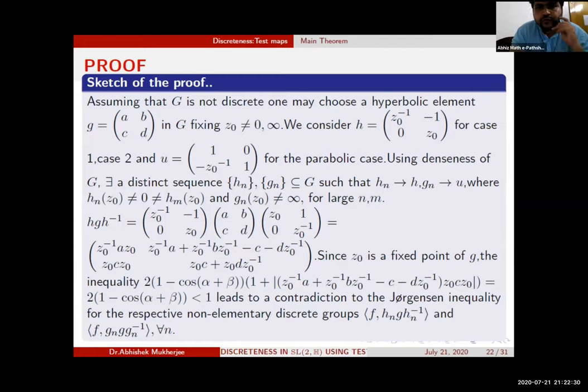The scheme of the proof depends on the choice of h, the hyperbolic element which will exist in the group G if it is not discrete. The fixed point z₀ is not equal to 0 or ∞. This existence will ensure the choice of h for the first and second case. For the last one, the parabolic case, you need to choose this element as (1, 0; -z₀⁻¹, 1).